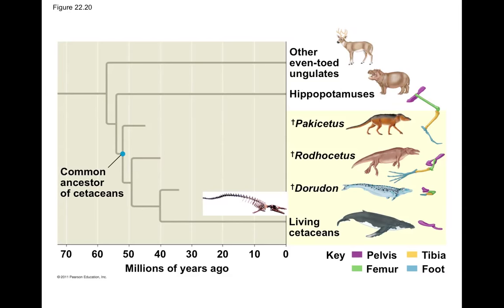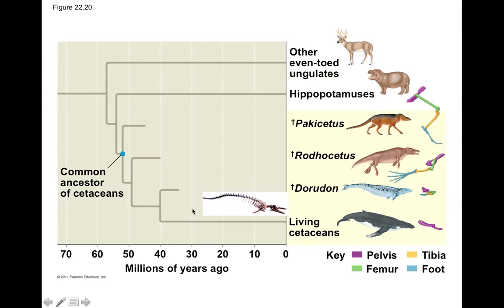Rodhocetus has better adaptive features for a semi-aquatic lifestyle — the nostrils have moved back from the front of the head to a bit further back to enable breathing at the surface. Moving to Dorudon, we can see the pelvic girdle and hind limbs becoming more and more reduced as these organisms adapted to spending more and more time in the aquatic environment.